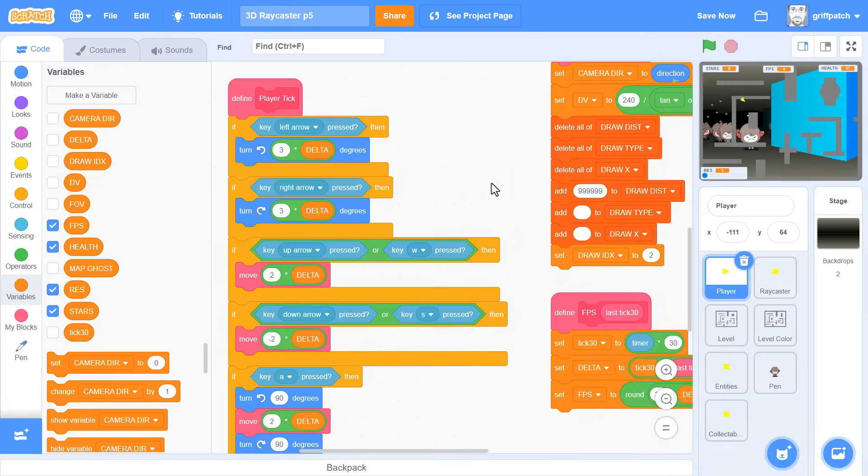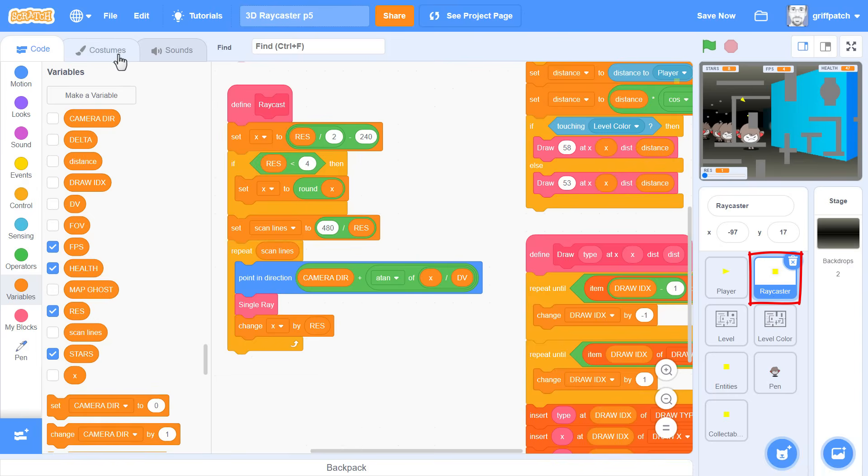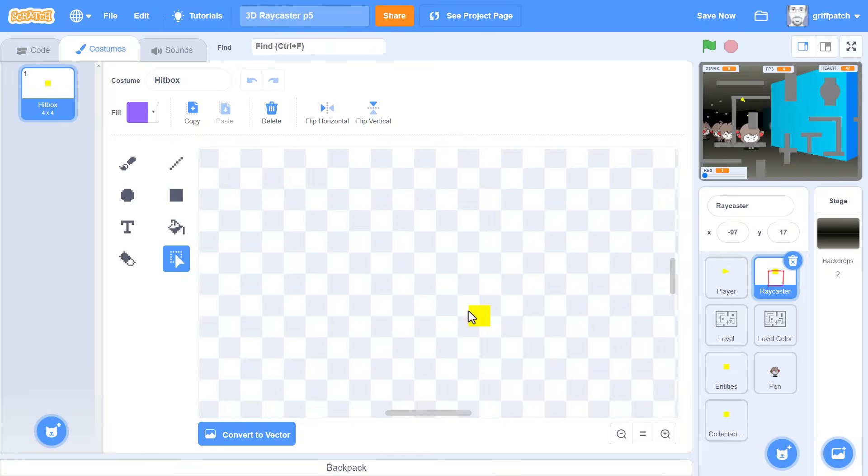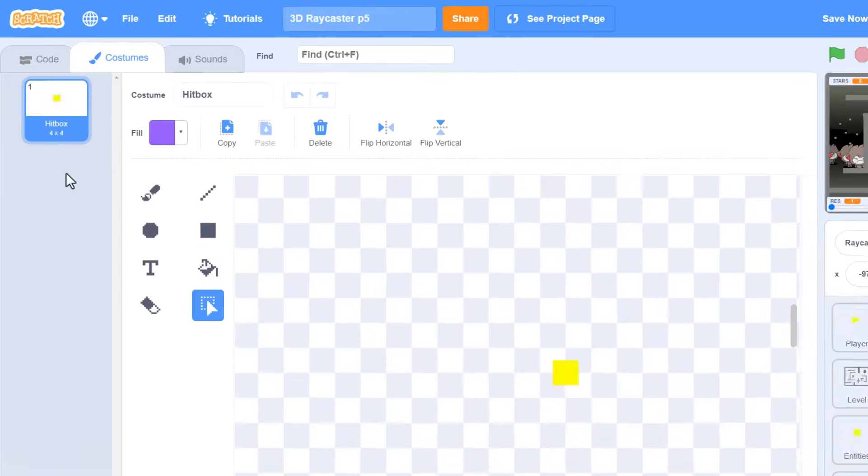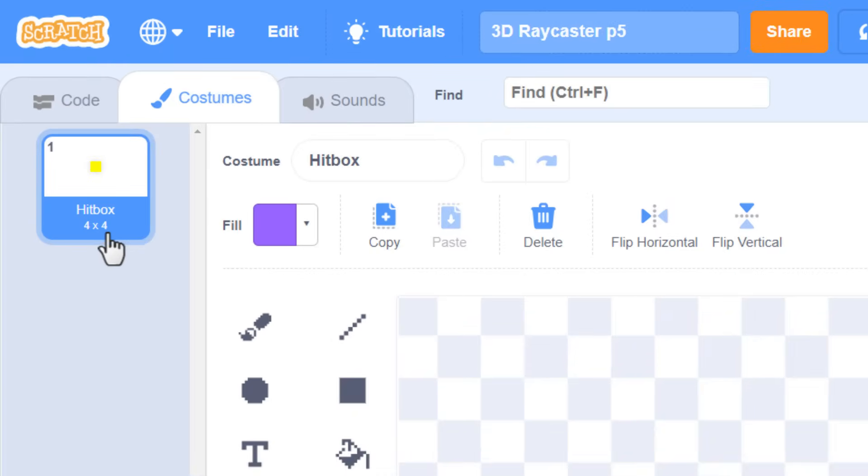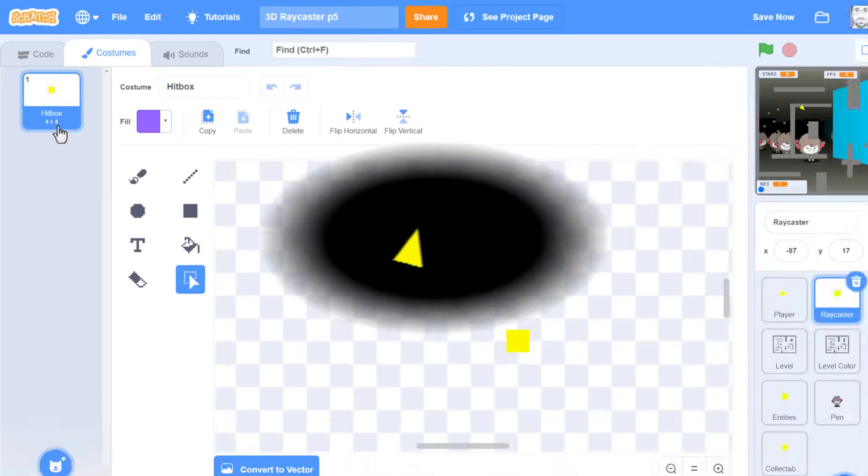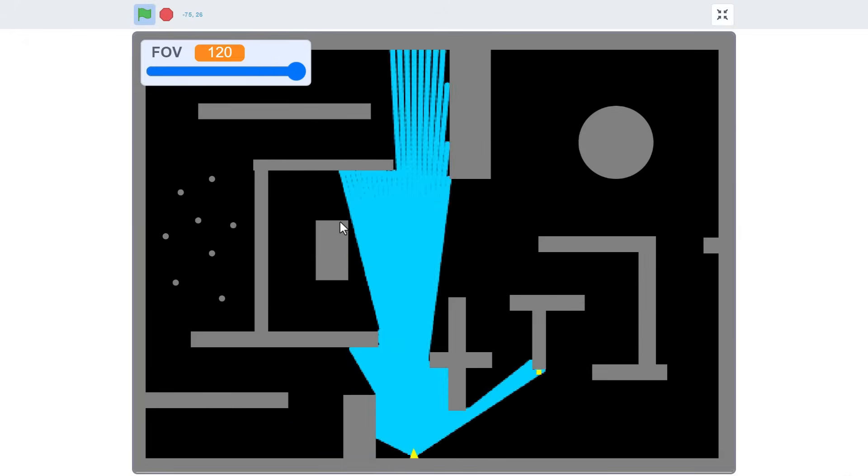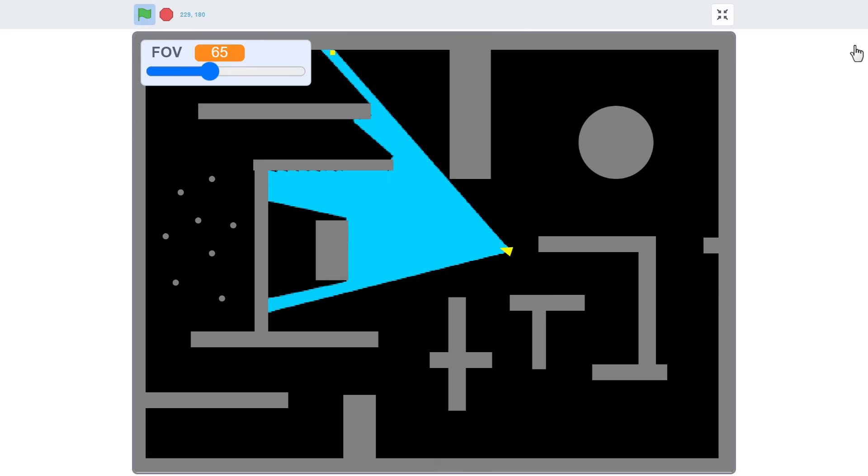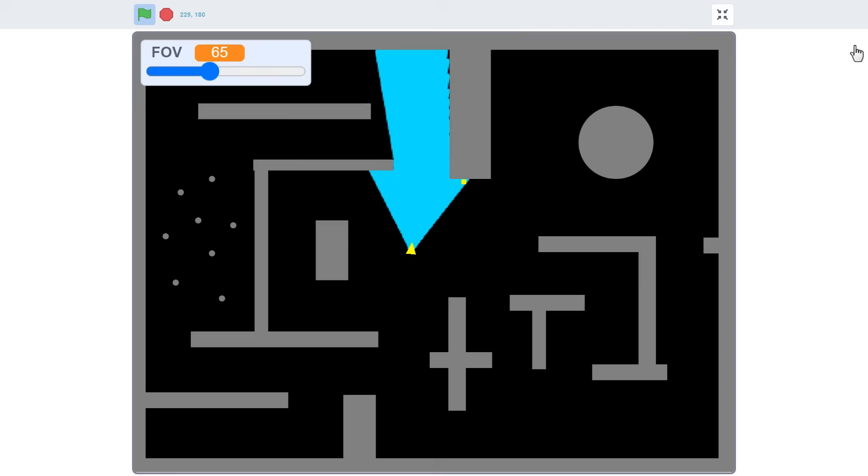For this, we need to be in the raycaster sprite. If you look at the costumes, you can see we have the single hitbox costume, and it's a 4x4 pixels in size. This is the costume we fling across the level, over and over again as we raycast. And each time we ask, are we touching the level?